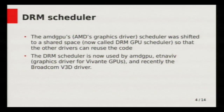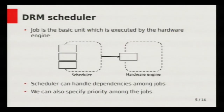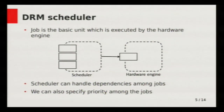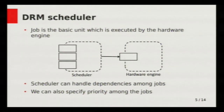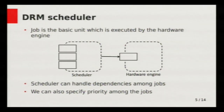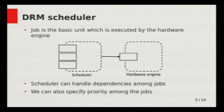Now we'll look at the organization of the scheduler. I'll use the word 'job' a lot — a job is the basic unit which can get executed on a hardware engine. Here is the hardware engine, and it has a hardware queue. The responsibility of the scheduler is to push jobs to this hardware queue. The scheduler itself has software queues, and the driver is responsible for pushing jobs to these software queues. The scheduler then schedules jobs onto the hardware queue. It has multiple software queues representing different priorities, and it also handles dependency — for example, job J1 can depend on J2, so J1 cannot be executed unless J2 has finished.